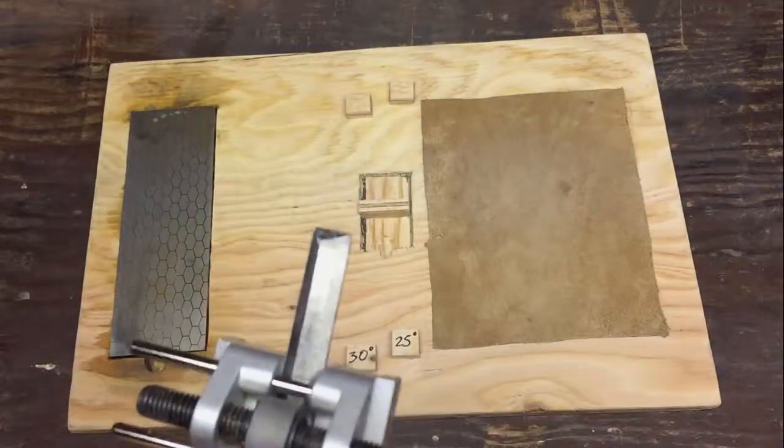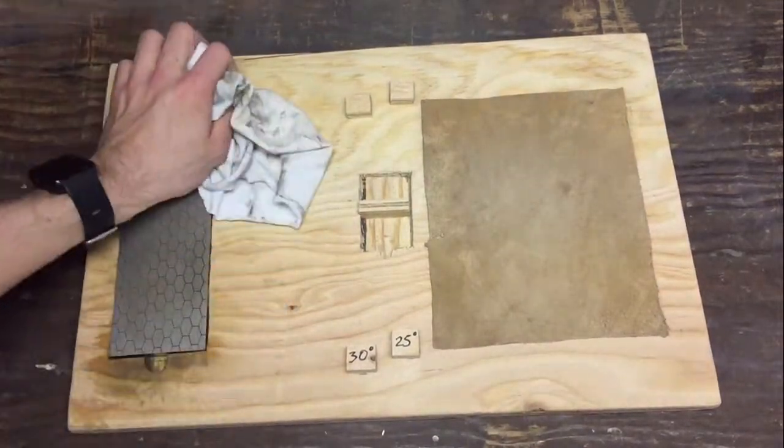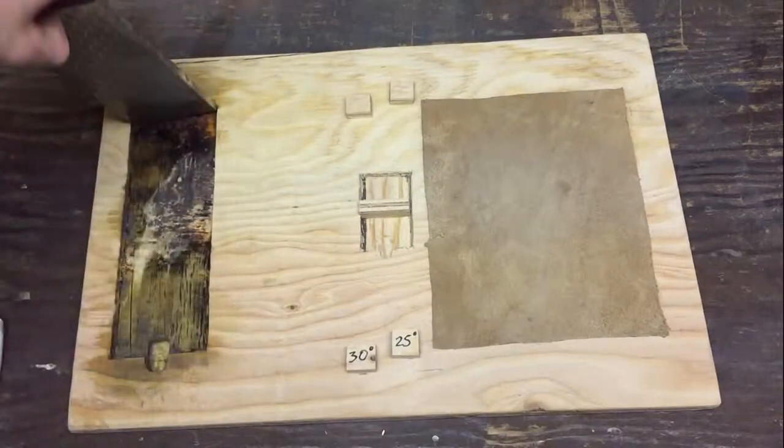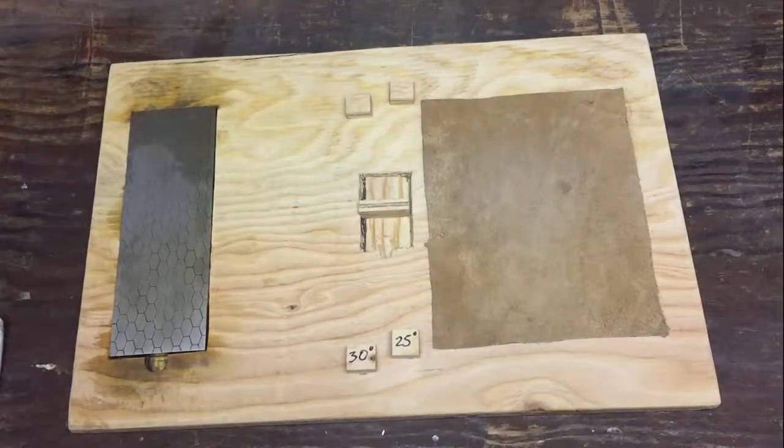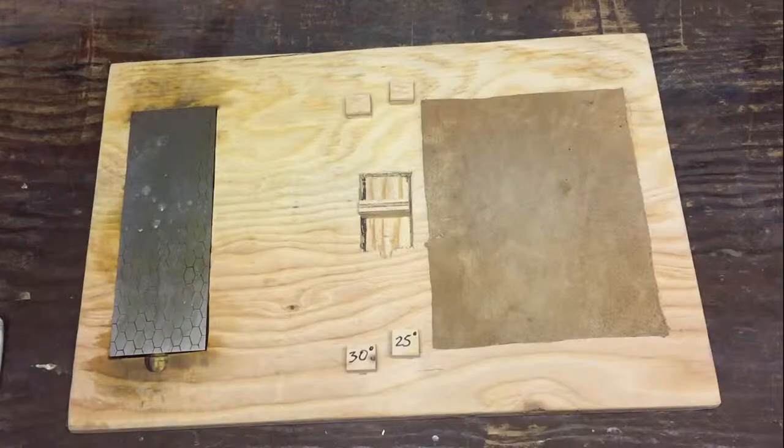And here's how I use it. So still going on the 400 grit, always starting low when getting high in grits. So turning my plate around, put some glass cleaner. And this is how it works.